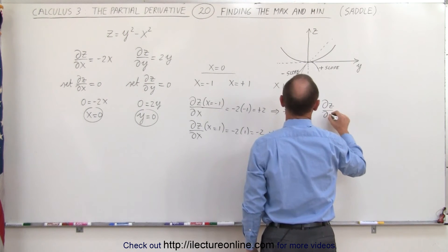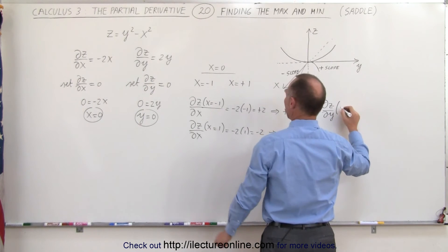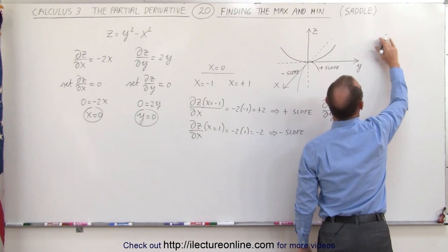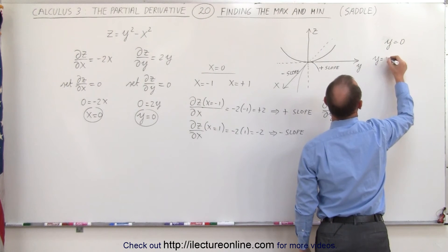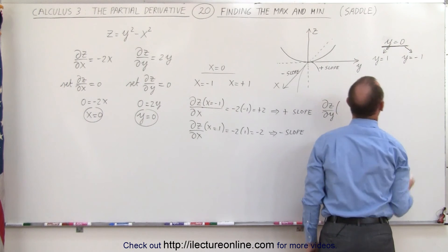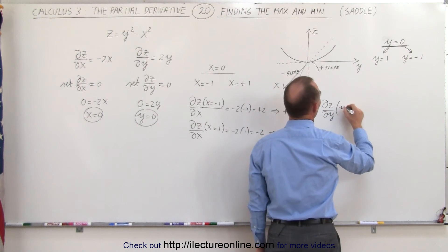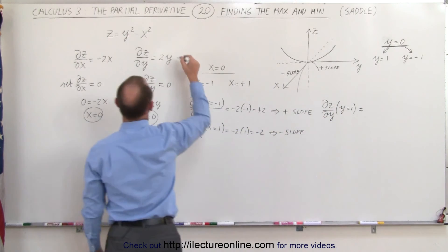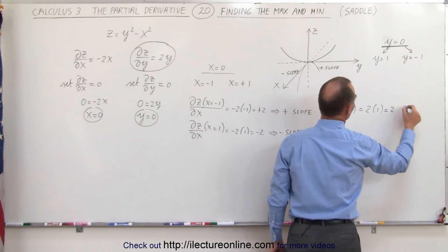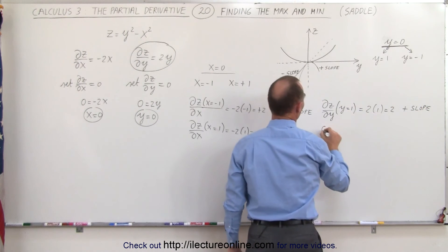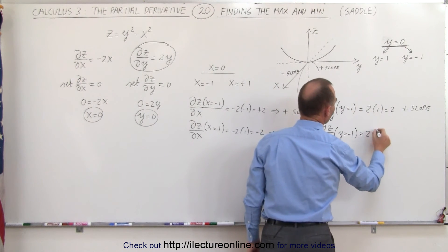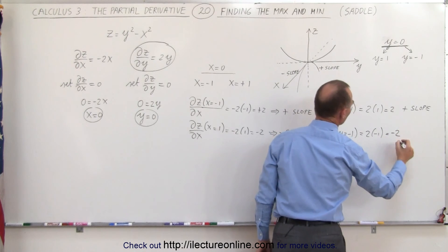Now let's do the same for the partial derivative with respect to y. We'll try y = 1 and y = −1 on either side of the origin. The partial of z with respect to y at y = 1 equals 2 times 1, which is 2 — a positive slope. At y = −1, it equals 2 times negative 1, which is negative 2 — a negative slope.